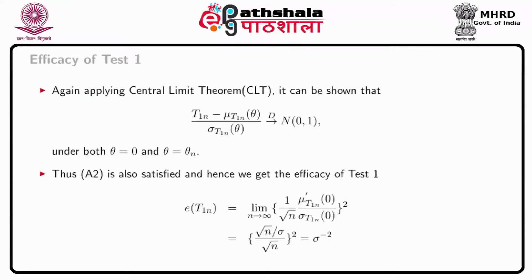By applying the central limit theorem, T1_n minus mu(T1_n, theta) divided by sigma(T1_n, theta) converges to normal(0,1) in distribution under both theta equals 0 and theta equals theta_n, so A2 is also satisfied. Hence, the efficacy of test 1 is sigma to the power minus 2.